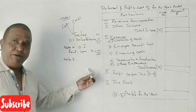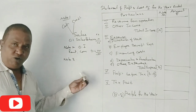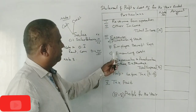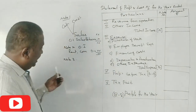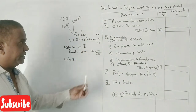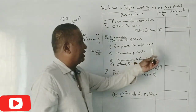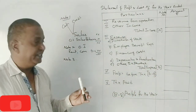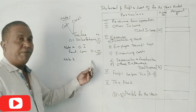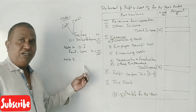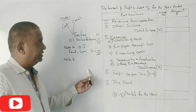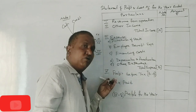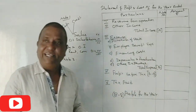Note Number 4 covers Employee Benefit Expenses and Note Number 3 covers Purchases. Each note section shows the Particulars and the Amount, with a Total Amount at the bottom. Clear?